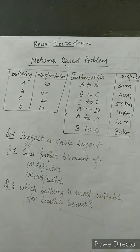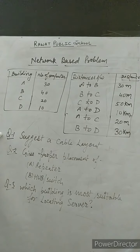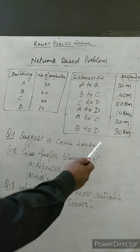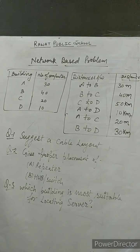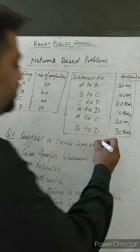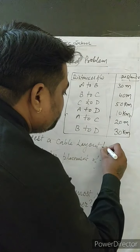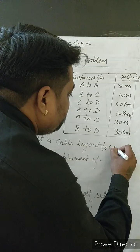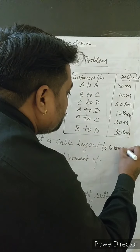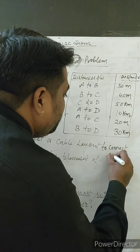Now the question is asking us: Question 1 — suggest the cable layout to connect all buildings. And Question 3 — which building is most suitable for locating the server, out of buildings A, B, C, and D?